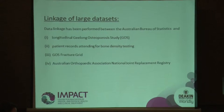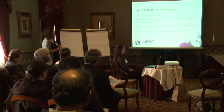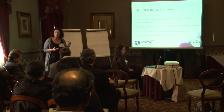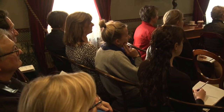ABS data gives us the SEIFA values and the ARIA — the Accessibility and Remoteness Index of Australia. Census is held every five years. It gives us individual-level data, but the ABS aggregates it into indexes at aggregate levels — that's the SEIFA that Helen spoke of. It's strong data, essentially covering everybody, and it also provides the ARIA index.